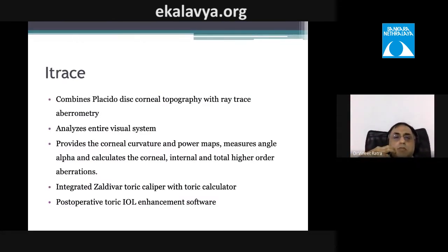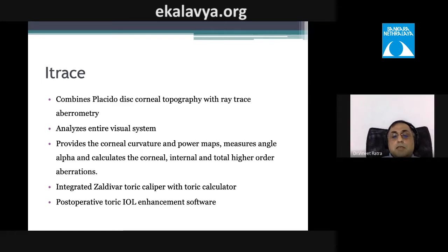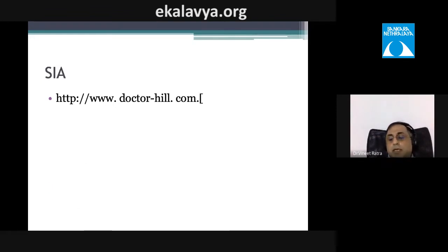The iTrace system combines Placido disc corneal topography with ray-traced aberrometry. It analyzes the entire visual system — corneal curvature, power maps, angle alpha, higher-order aberrations — and includes a built-in toric calculator. If you have iTrace, you can enter data directly and it will determine the correction needed, rather than using astigmatismfix.com.